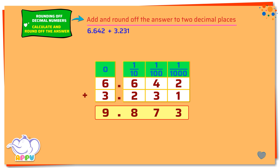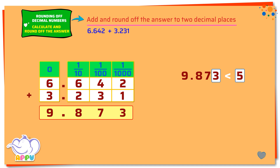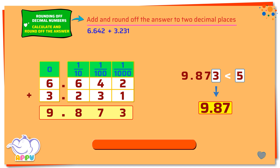Let's round off the answer 9.873 to two decimal places. To round off to two decimal places, we consider the thousandths digit of the number, which is 3. Remember the rule: if the thousandths digit is less than 5, then the hundredths digit is rounded down. 9.873 is rounded down to 9.87. So the rounded off answer is 9.87.